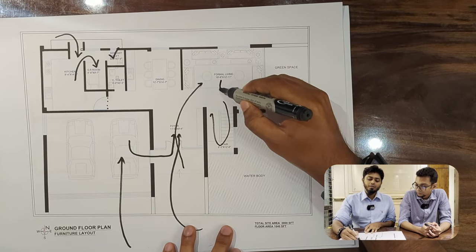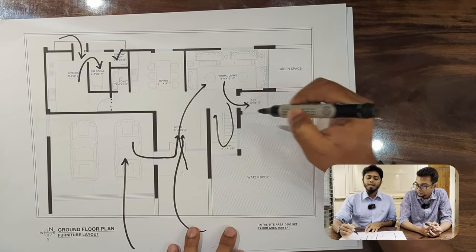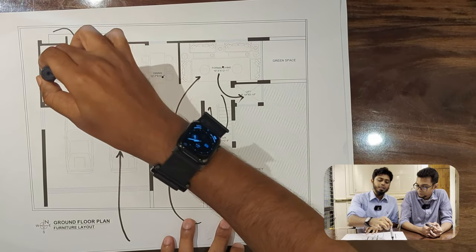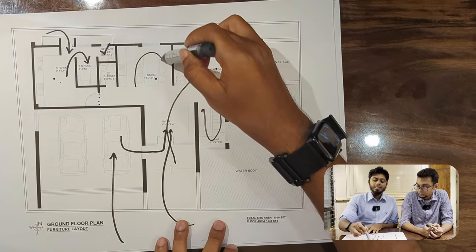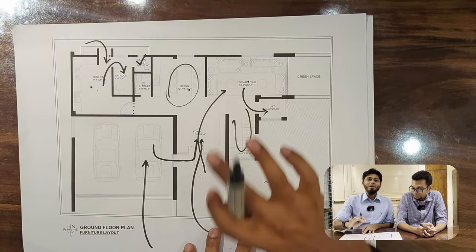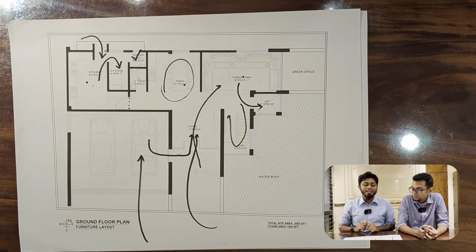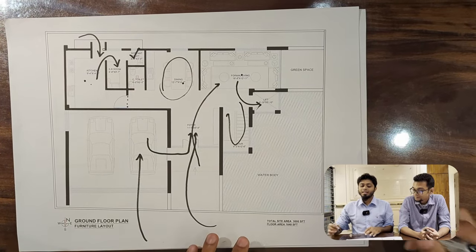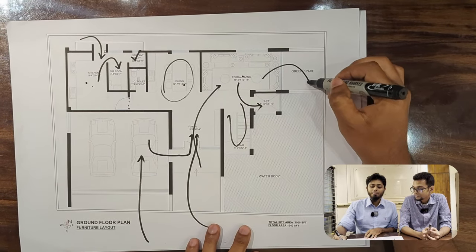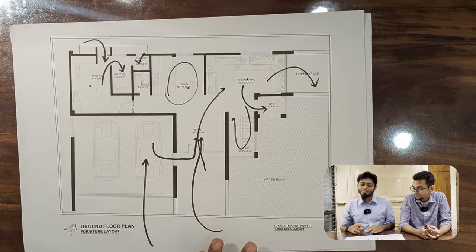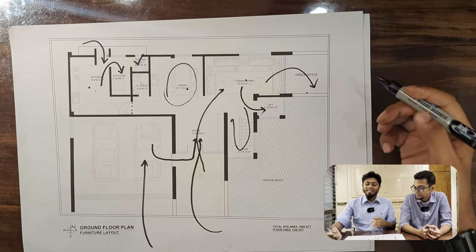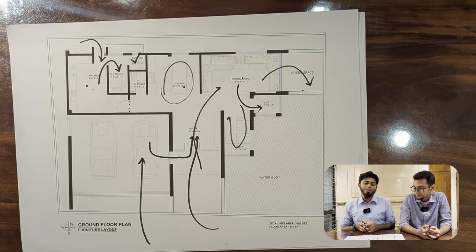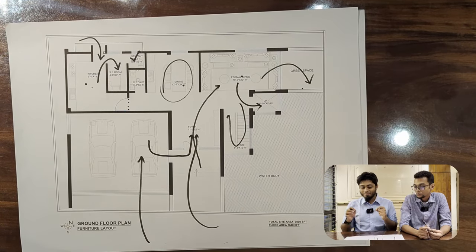We are going to have a new place for formal living. Formal living includes a kitchen and dining facility. Formal living is an interesting place. For this, we have a green balcony — a green space — where we can enjoy the waterways.